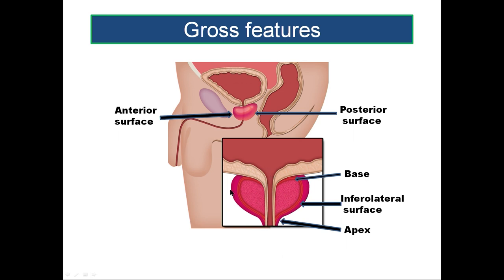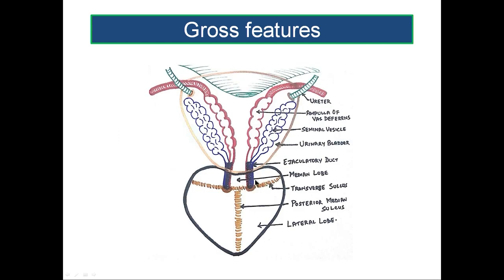In a coronal section you can make out two more surfaces — the inferolateral surfaces of the prostate — and you can see the prostatic urethra passing through the prostate. The posterior surface shows some more features in this diagram.